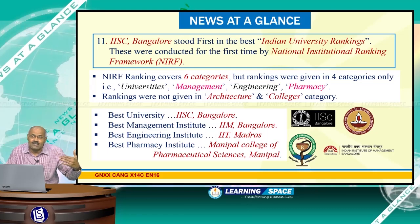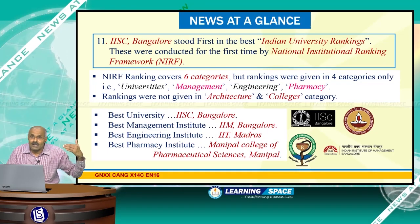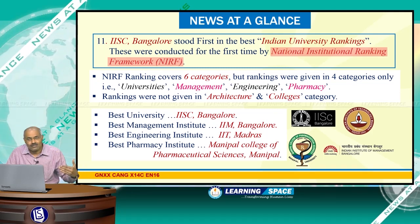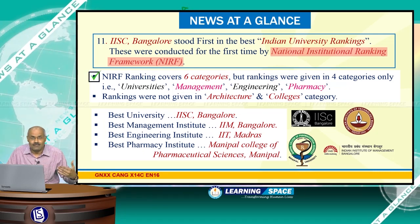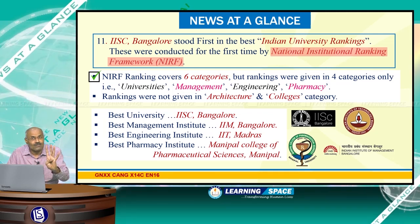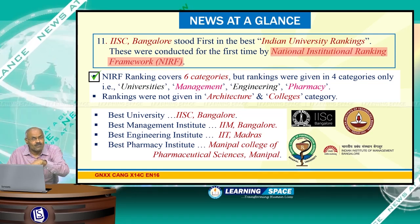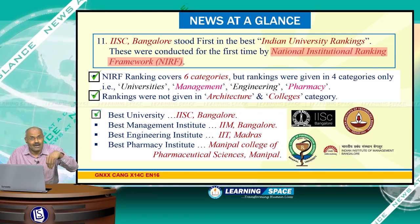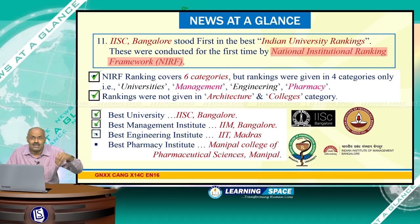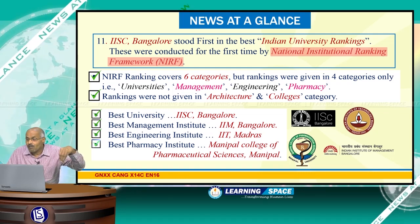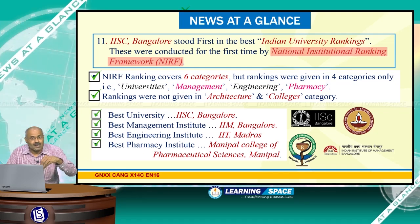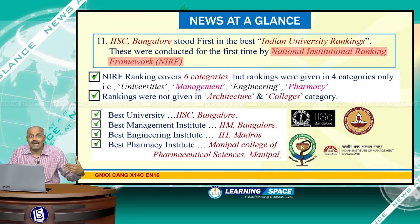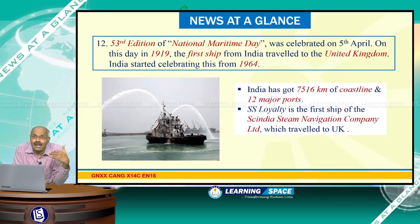IISc Bangalore stood first in the best Indian university rankings, conducted in India for the first time by the National Institutional Ranking Framework (NIRF). There are six total categories; rankings were given for four — universities, management, engineering, and pharmacy — while architecture and colleges categories were not ranked. Best university: IISc Bangalore; best management institute: IIM Bangalore; best engineering institute: IIT Madras; best pharmacy college: Manipal College of Pharmaceutical Sciences, Manipal. The methodology used by NIRF came in for severe criticism.